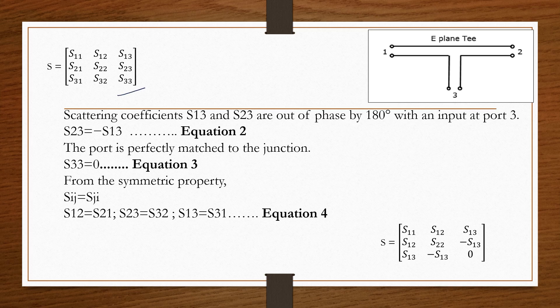We already know that S13 and S23 are out of phase by 180 degrees with input at port 3. That is why S23 equals minus S13. Now, very importantly, we are finding the scattering matrix for a perfectly matched E-plane T. If port 3 is an input, there is no reflection back — it is perfectly matched. Therefore S33 equals 0.